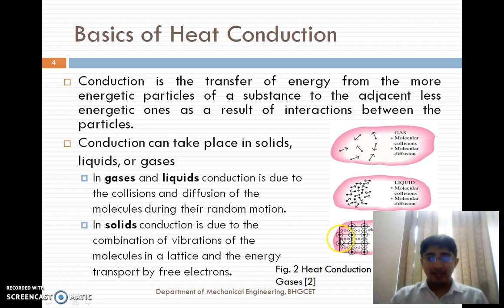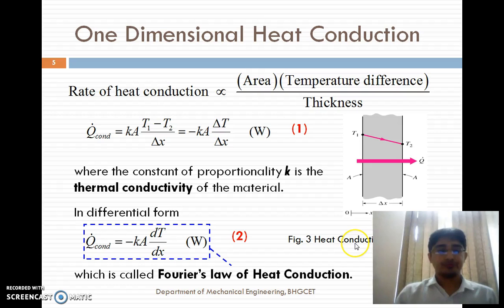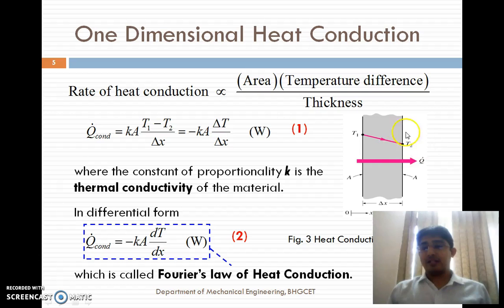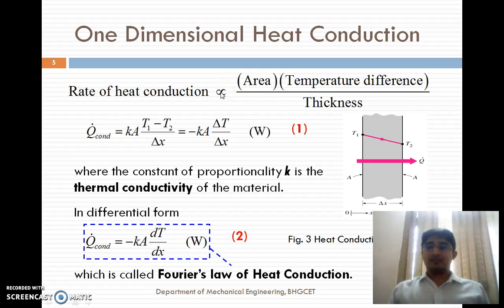One dimensional heat conduction. The rate of heat conduction — if we take a one dimensional example, a one dimensional plane wall: one side is maintained at temperature T1, the other side at temperature T2. The area exposed to heat transfer is due to the temperature difference delta T = T1 minus T2. The rate of heat transfer by conduction is directly proportional to the area normal to the direction of heat transfer and the temperature difference delta T, and inversely proportional to the thickness of the wall.